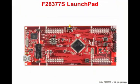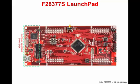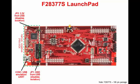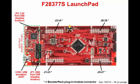The LaunchPad incorporates an XDS100V2 emulator as shown on the left side of this diagram. The USB mini connector, located in the lower left corner, provides a JTAG communication link between the device and Code Composer Studio in addition to supplying power. Jumpers JP1 and JP2 can be removed if electrical isolation is required; however, the device will then need to be powered externally through the booster pack headers, located on J1 through J8. LED D1 illuminates when power is applied to the LaunchPad.